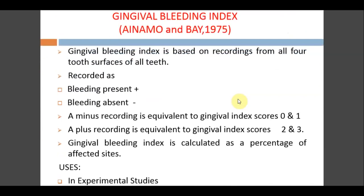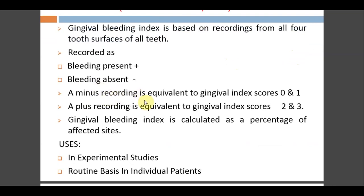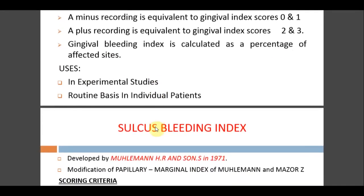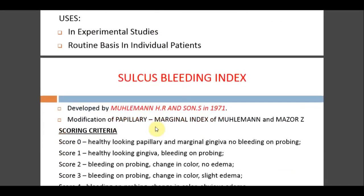The Gingival Bleeding Index was given by Ainamo and Bay in 1975. It is based on recording from all four surfaces of teeth — buccal, lingual, mesial, and distal — recorded as bleeding present (+) or absent (−). The bleeding index is calculated as a percentage of affected sites. It can be used in experimental studies and with individual patients.